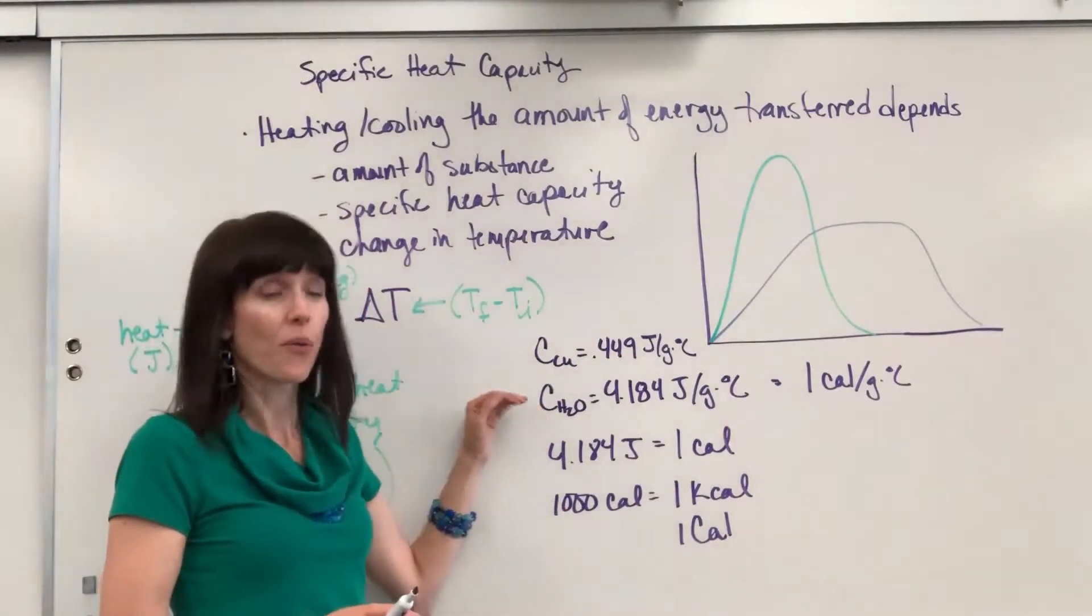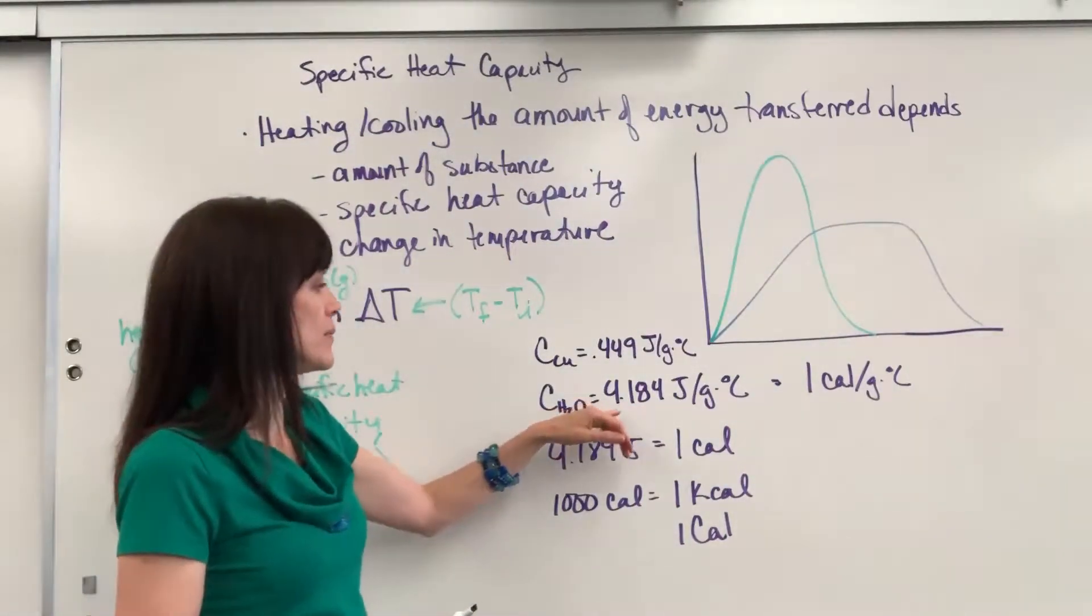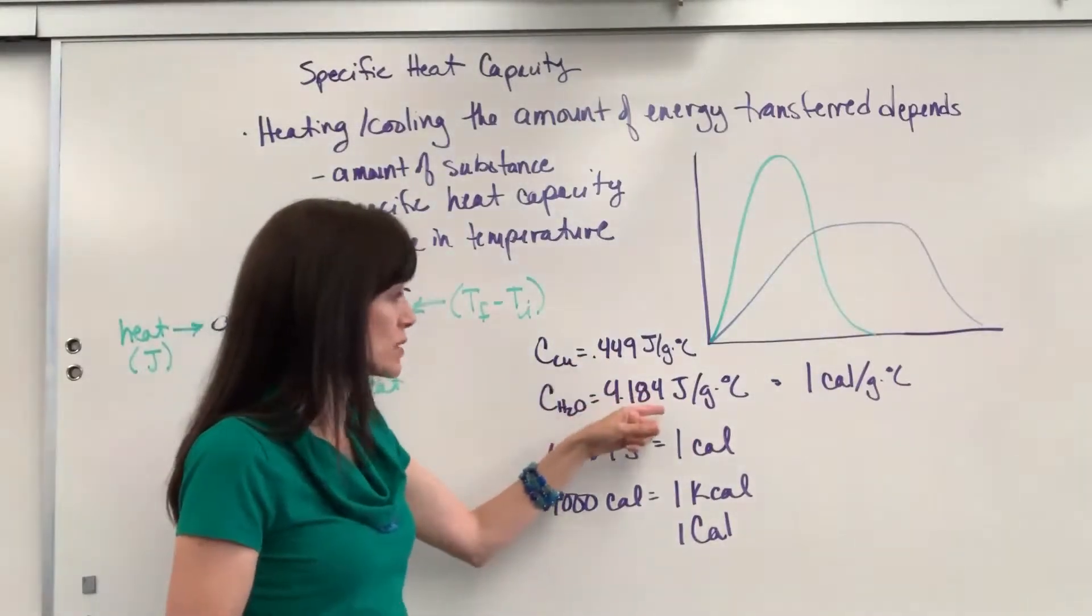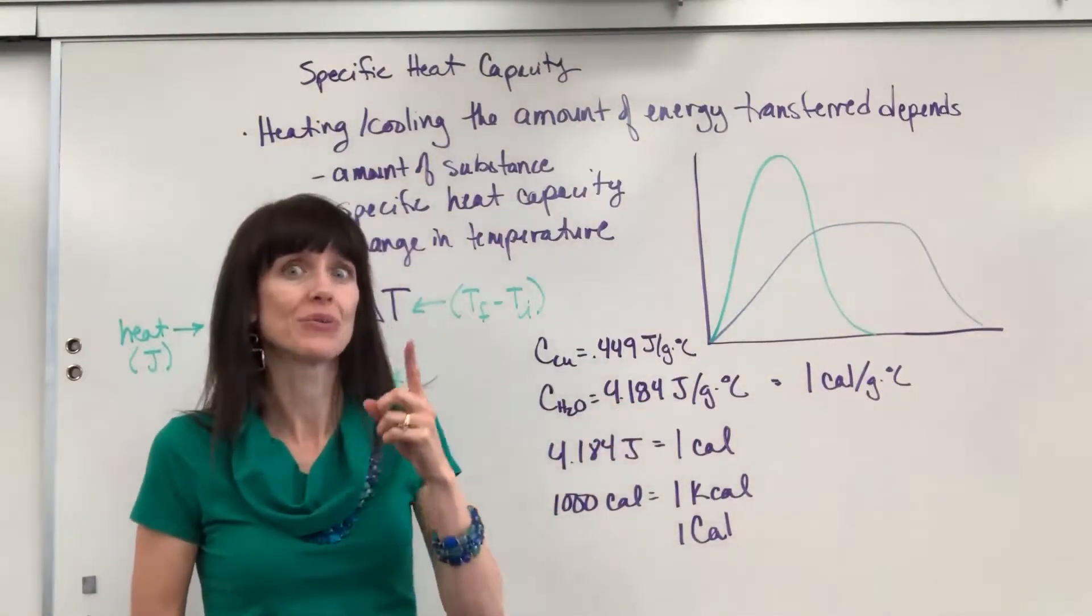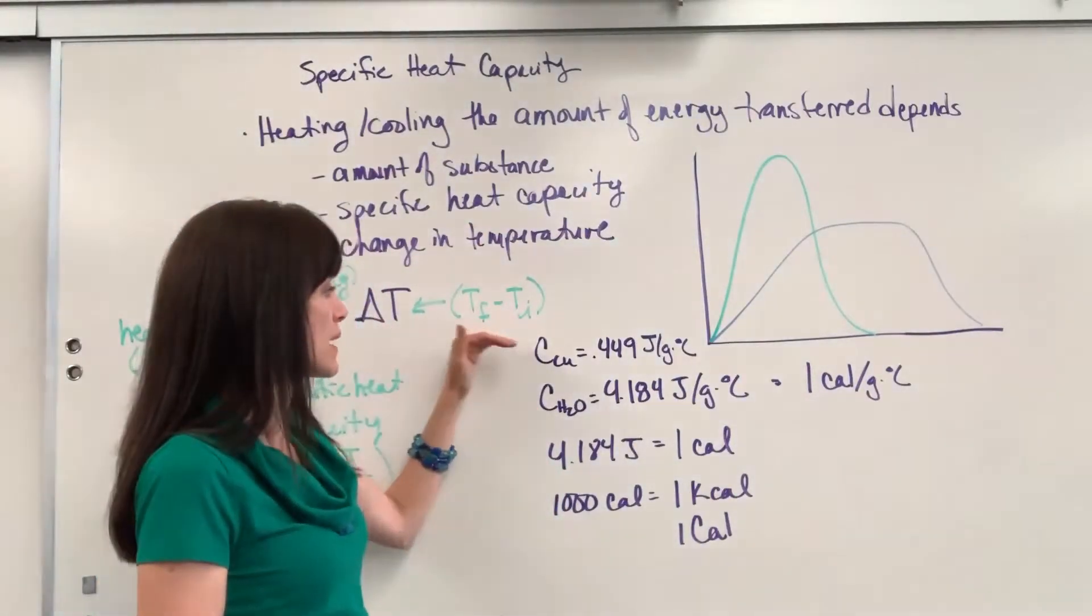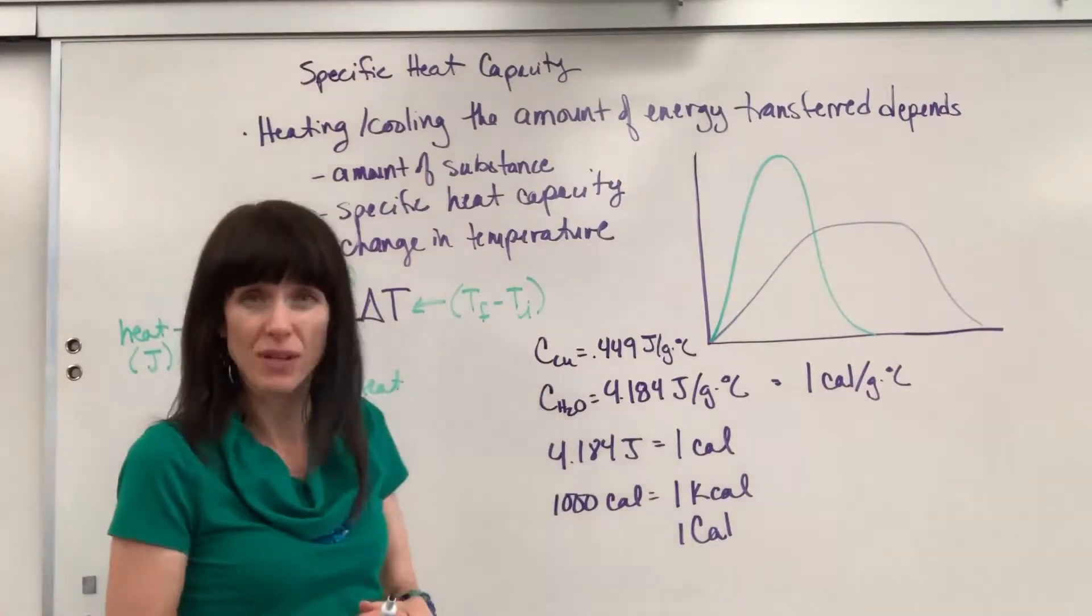Contrast that with water. Water has a considerably high specific heat. It's 4.184 joules. So you put that many joules to raise one gram of water one degree C. Wow. It takes 10 times the amount of energy to raise one gram of water one degree C than it does for the copper.